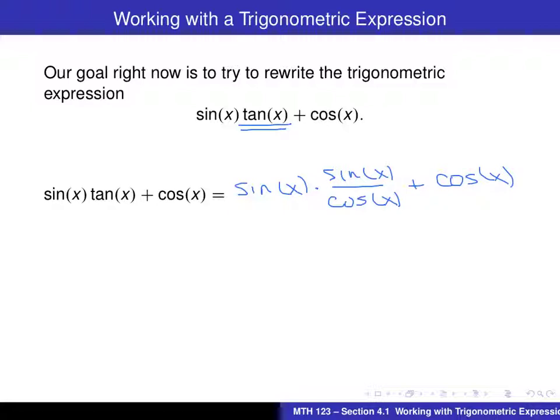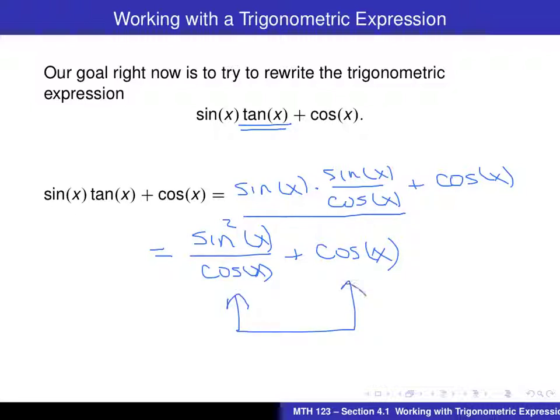Now, as you look at that, you start looking at each term. In particular, this one here, can't do much with cos(x). But this one, we can multiply this out and what we get is sin squared of x divided by cos(x) plus cos(x). And this is where now we have to use some algebra. In particular, what we want to try to do is to take this expression and this expression and combine those into a single fraction.